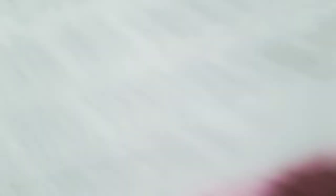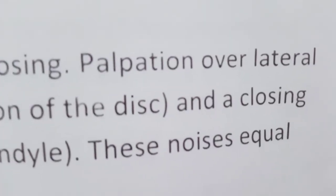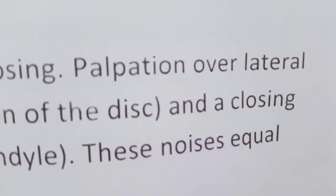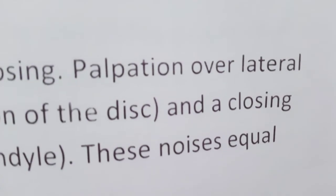Temporalis, masseter, and medial pterygoid provide protrusion of the mandible 7 millimeters and depression 4 millimeters. Temporalis posterior fibers enable lateral deviation 10-15 millimeters. Lateral pterygoid and medial pterygoid on the contralateral side facilitate these movements.